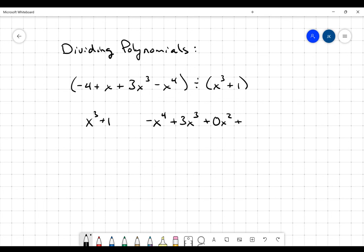I might be able to get away without putting that placeholder in there, but I just have to be really careful with my work. So it's better to have that 0x squared there just so I see it and can work around it.